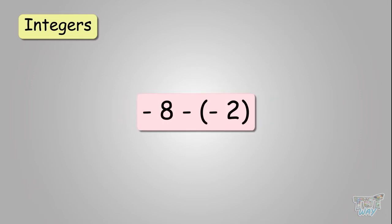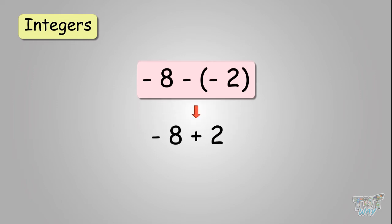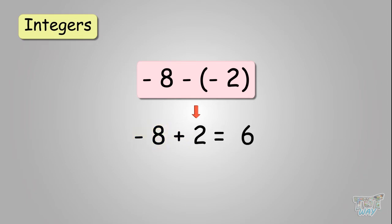Now: negative eight minus negative two. You have two subtraction signs together, so it becomes negative eight plus two. Now you have two opposite signs, so you subtract. The answer will get the sign of the larger number, so the answer will be negative six.